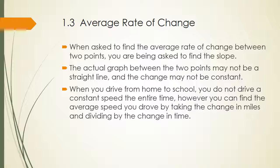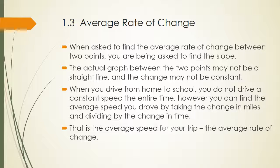Here's a way to think about it: when you drive from home to school, you don't drive at a constant speed the entire time. However, you can find the average speed by taking the change in miles and dividing by the change in time. That gives you your average speed for the trip, or your average rate of change.